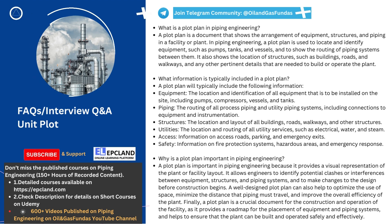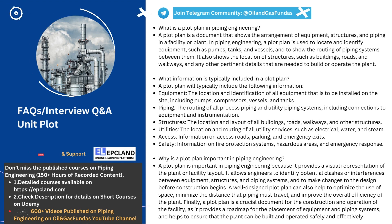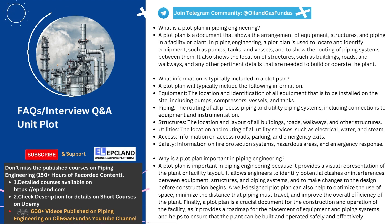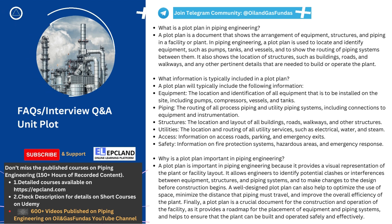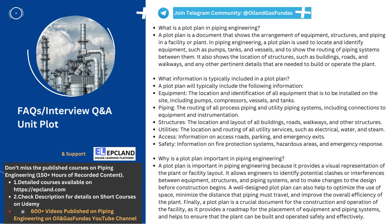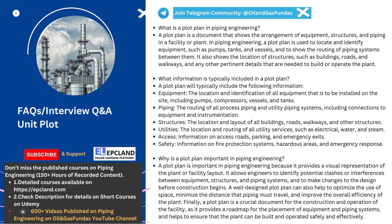Fourthly, information on access roads, parking, and emergency exits is also included in the plot plan. This helps to ensure that the plant can be accessed and evacuated safely in the event of an emergency. Finally, a plot plan may also include information on fire protection systems, hazardous areas, and emergency response. All of these details are important to ensure the safety and effectiveness of the plant. In summary, a plot plan typically includes information on equipment, piping, structures, utilities, access, and safety — all essential for the construction and operation of a plant or facility.